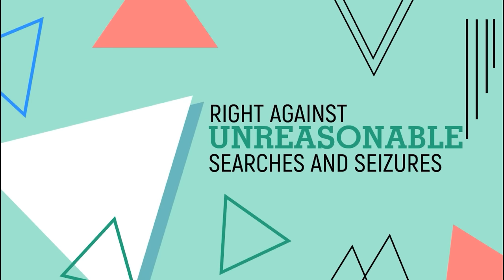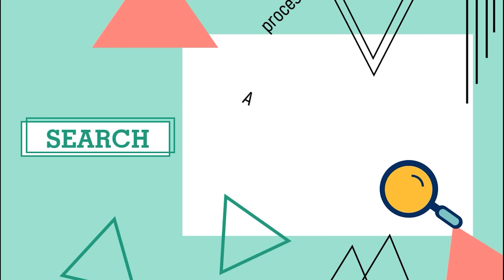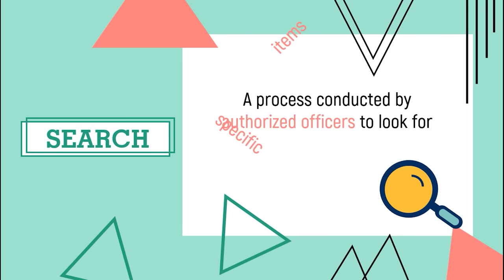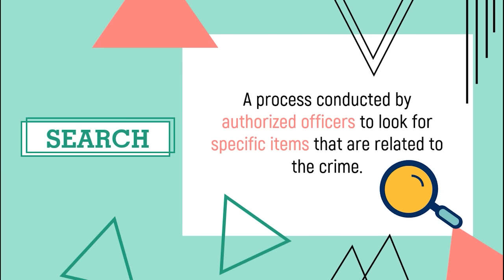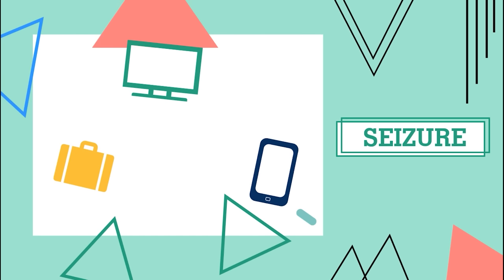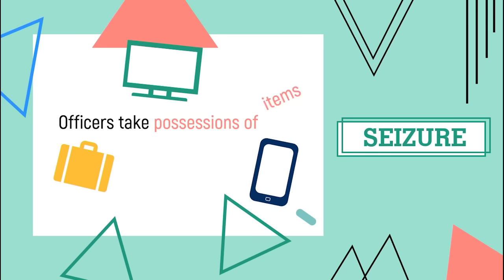Let's move on to the second right: the right against unreasonable searches and seizures. First, let's differentiate search from seizure. Search is a process conducted by authorized officers to look for specific items that are related to the crime. Seizure, on the other hand, happens if officers take possession of the items during the search.